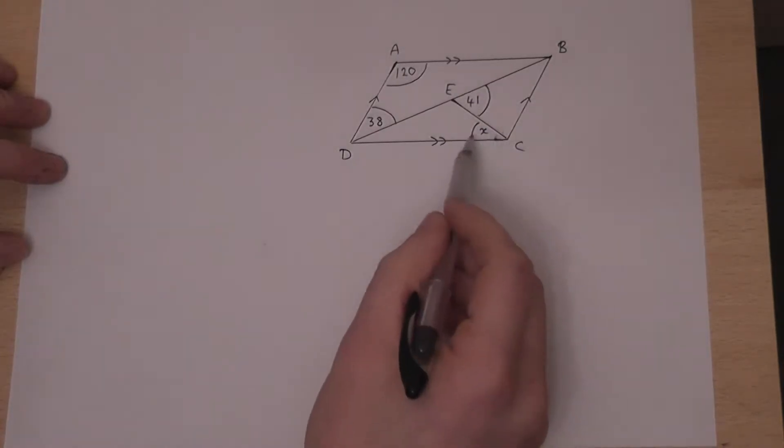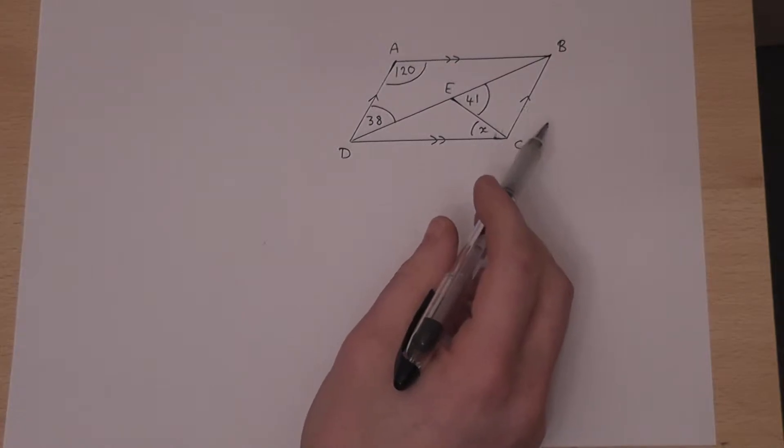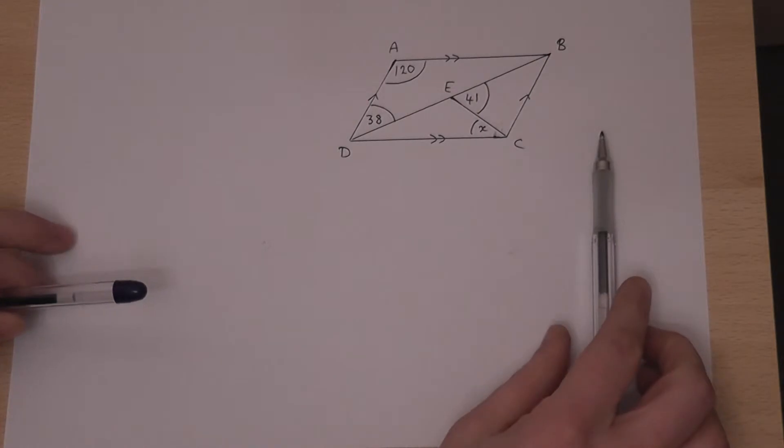In this question, we're asked to find x, showing all of our reasons. The method here is to gradually work out any angles we can, and to explain along the way our steps or our logic.